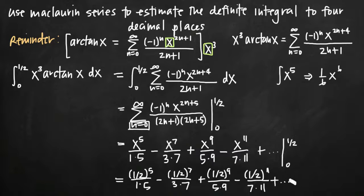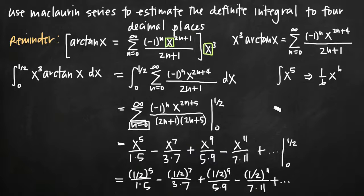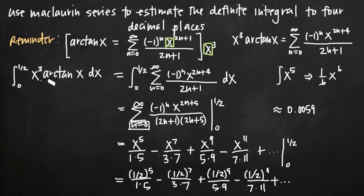We keep adding terms of this series until we're no longer affecting the fourth decimal place. When we do that, we find that this series is approximately equal to 0.0059. That's our estimate of the definite integral to four decimal places using a Maclaurin series.